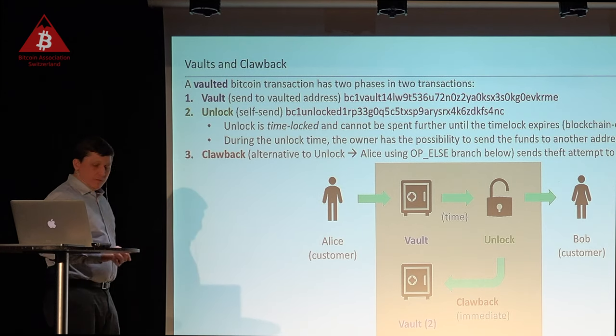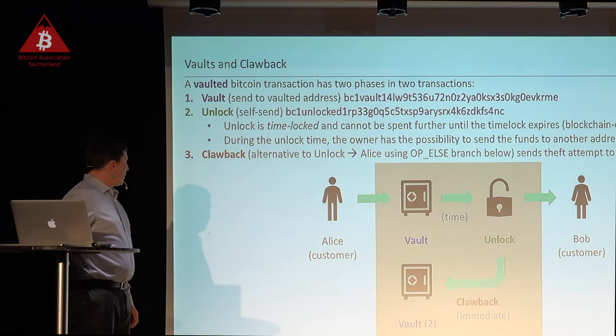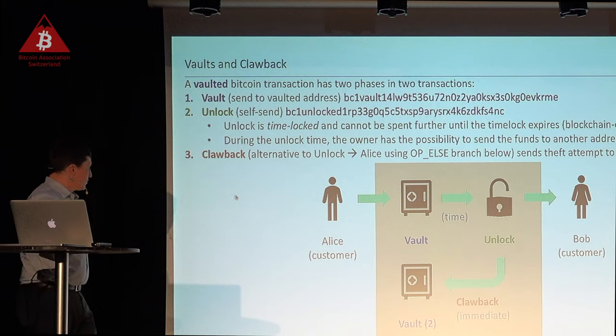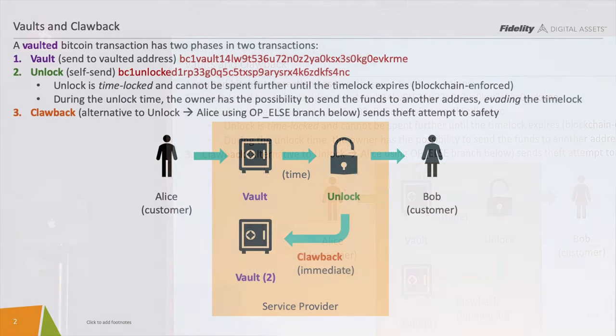The vault basically works in three phases. Alice is a customer of a service provider — that could be a custodian, an exchange, or anybody doing anything with Bitcoin where you're providing service to somebody else. Alice is your customer and Bob is your customer.